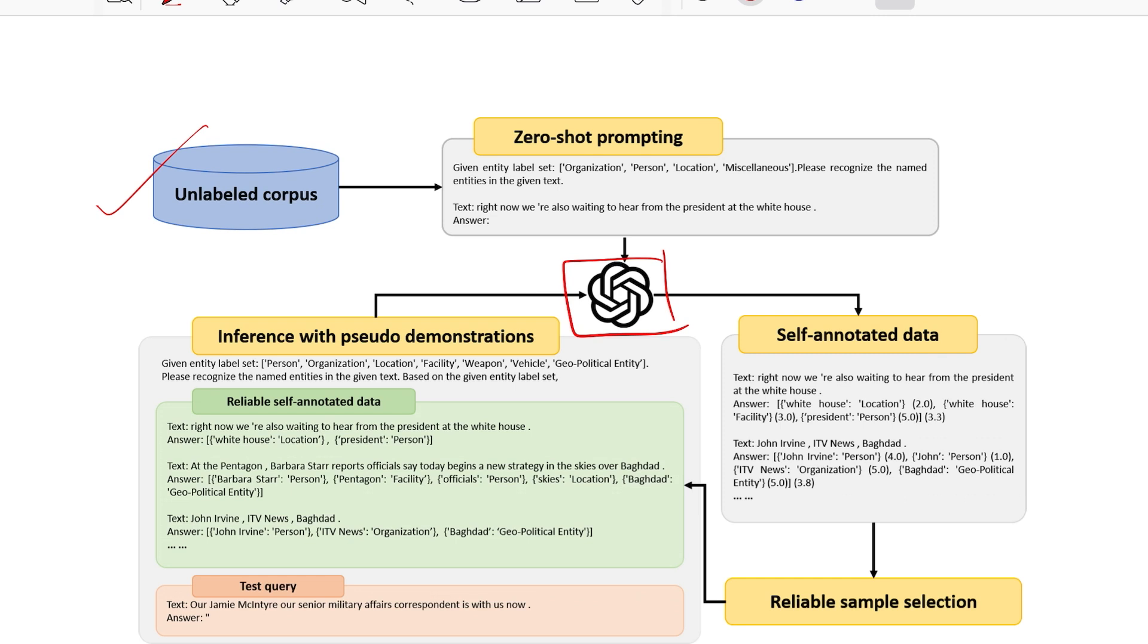And the idea is that we give it a prompt saying given entity label set and these are the entities that we are interested in. We ask you to recognize named entities from the given text and then we give it a text and answer colon. And now we expect the GPT or any large language model to kind of autocomplete itself by returning the relevant entities from this piece of text. So to this point this is a typical zero-shot prompting method.